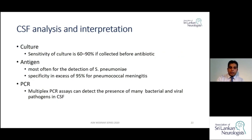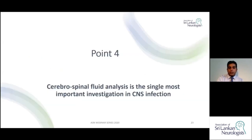Culture sensitivity is high if collected properly and before starting antibiotics. Bacterial antigens, though not available in all settings, have very high specificity for pneumococcal meningitis. PCR is also possible. Learning point four: CSF analysis is the single most important investigation in CNS infection — it should be done early and results interpreted accurately.